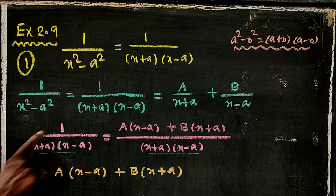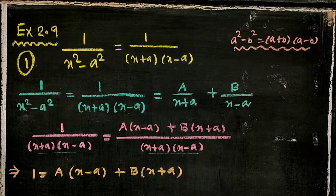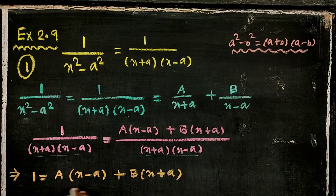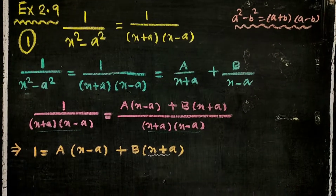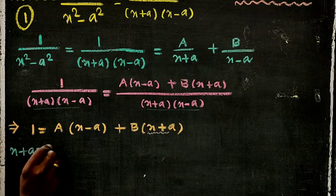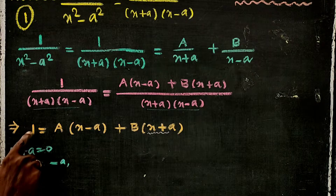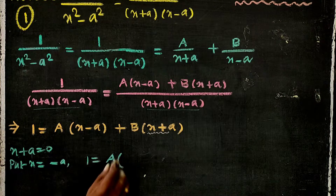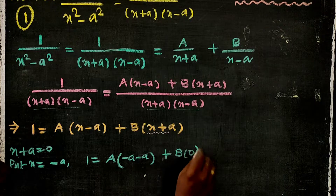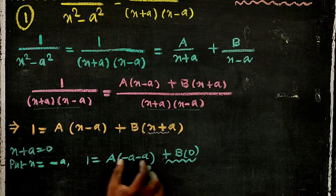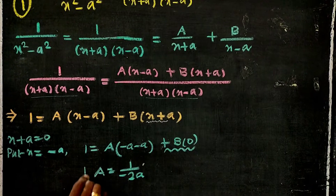Let's say 1 is equal to A into (x minus a) plus B into (x plus a). If x plus a is equal to 0, then x is equal to minus a. Putting x equal to minus a: 1 is equal to A into (minus a minus a) plus B into 0. So A into minus 2a is equal to 1, giving A is equal to 1 by minus 2a.